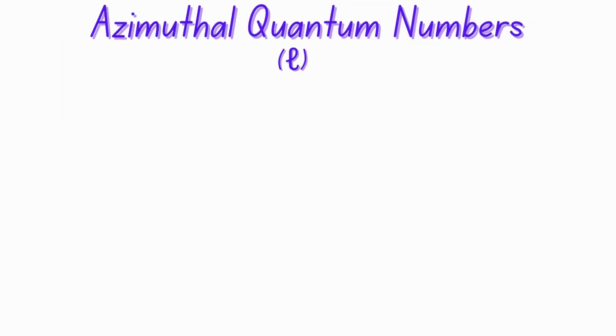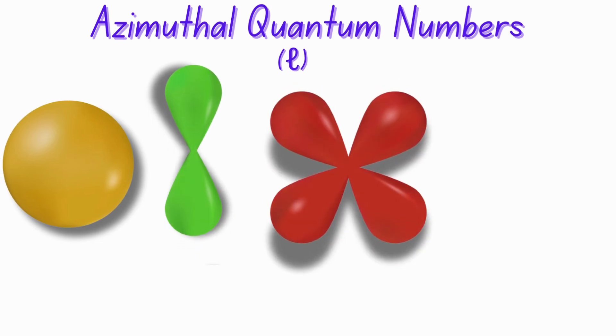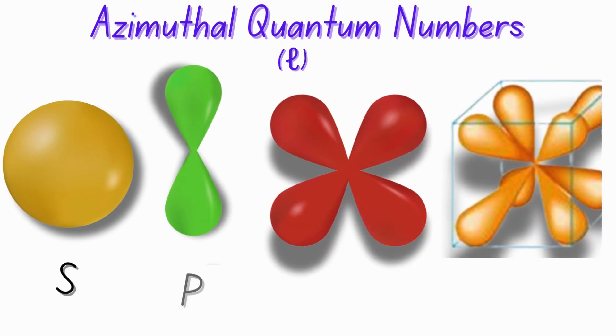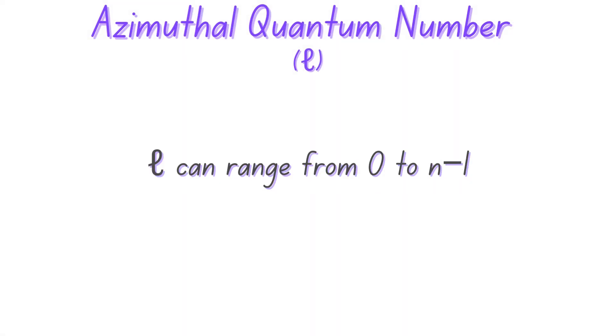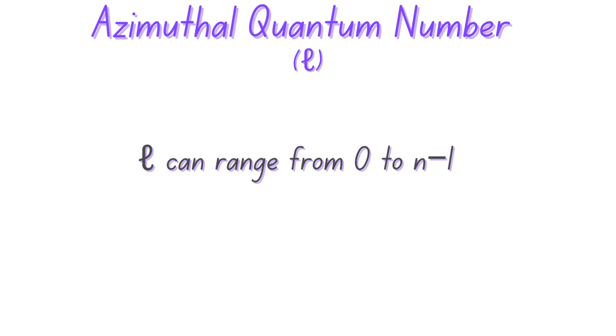Next, the azimuthal quantum number represented as l. This is also known as the orbital angular momentum quantum number. That's a mouthful. It defines the shape of the orbital in which an electron resides. It determines the type of sublevels, that is either s, p, d, or f within a given energy level. The values of l can range from zero to n minus one, where n is the principal quantum number.